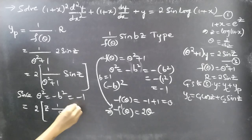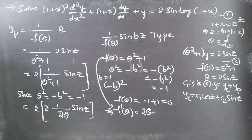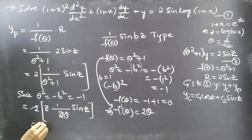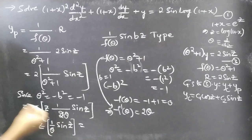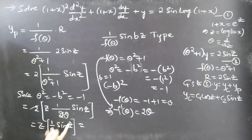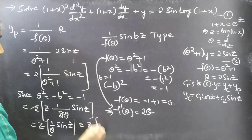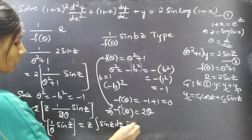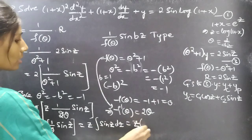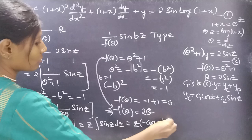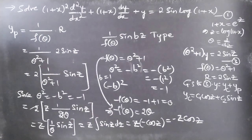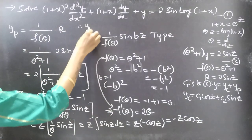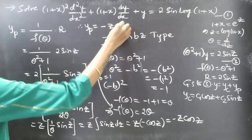Since 1/θ is an integral operator, we integrate sin z with respect to z: ∫sin z dz = −cos z. Therefore yp = z·(−cos z) = −z cos z.